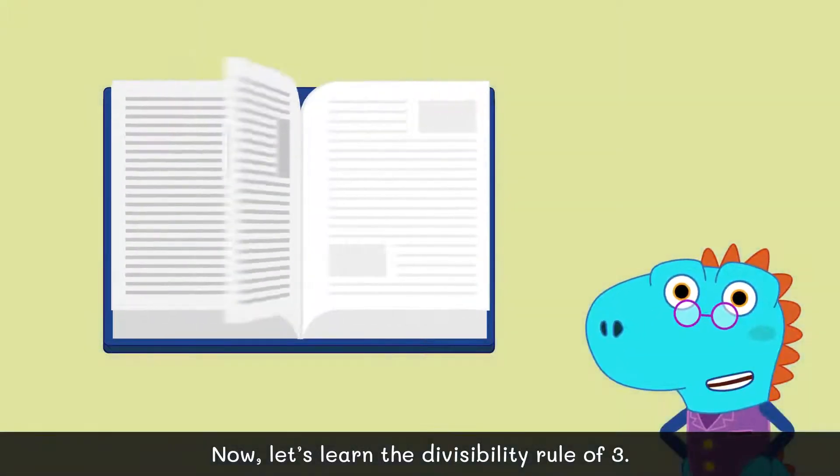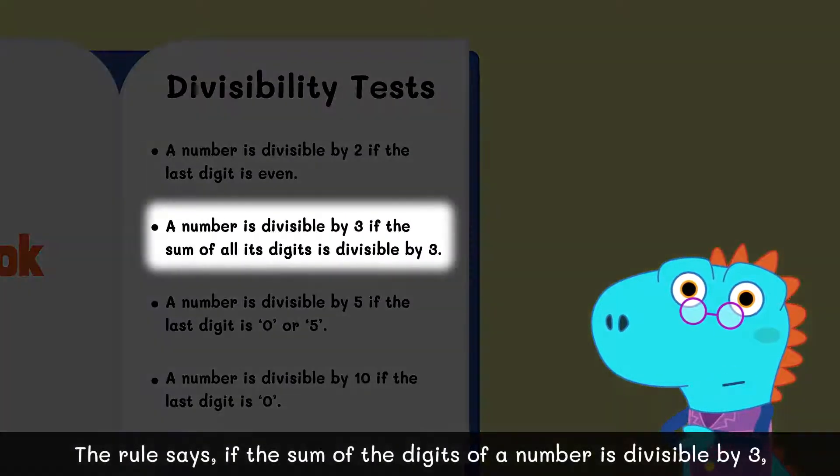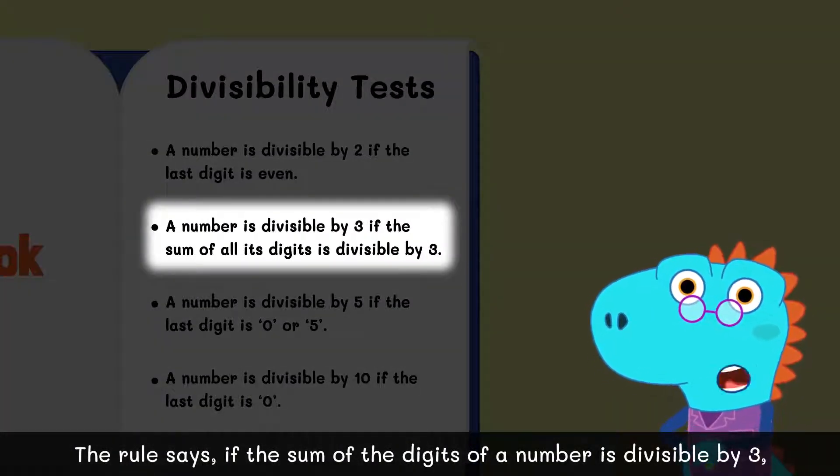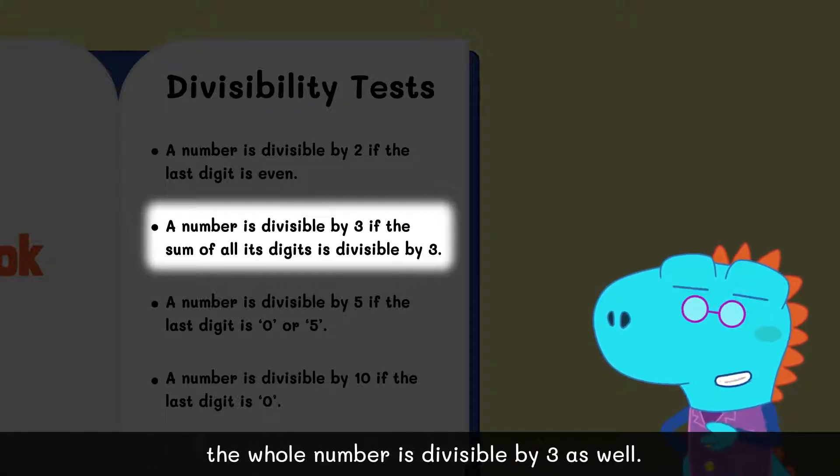Now, let's learn the divisibility rule of 3. The rule says if the sum of the digits of a number is divisible by 3, the whole number is divisible by 3 as well.